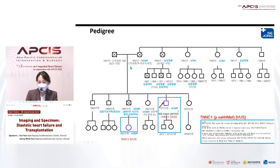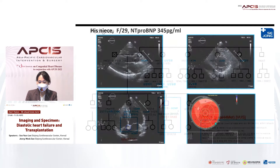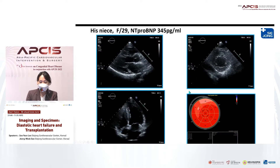This is his pedigree. He is the proband. His mother died from dilated cardiomyopathy, and his aunt received heart transplantation and LVAD insertion. His elder brother and sister were also diagnosed with heart failure and hypertrophic cardiomyopathy. We evaluated genetic analysis for this patient and his niece, who shared the same genetic mutation. We presumed the early stage of cardiomyopathy through his niece, who is young at 29 years old.